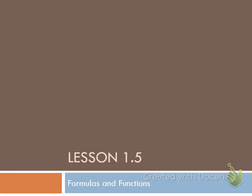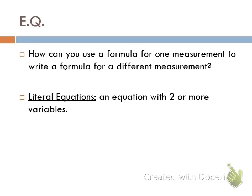Welcome to your first flipped class of this school year. Today we're going to do lesson 1.5, so make sure as we do this lesson on formulas and functions that you follow along with your notes and fill them in as we go. The essential question for today is: how can you use a formula for one measurement to write a formula for a different measurement? So far in this chapter we have worked on solving equations, and the inverse operations we've been using we're going to continue to use for this lesson as well.